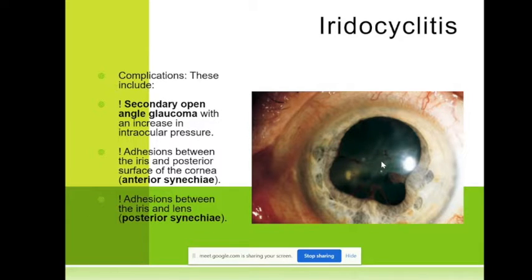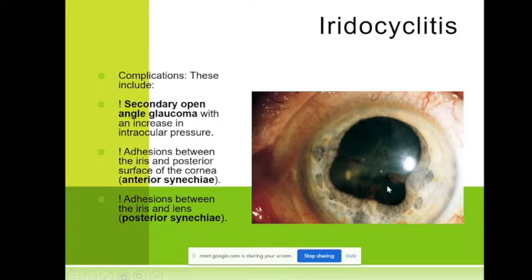For several hours iridocyclitis can give the so-called posterior synechiae. These are posterior synechiae — adhesion between the iris and the lens capsule. When we try to dilate the pupil, it is not round; it is irregular, like a clover shape, because of these synechiae.